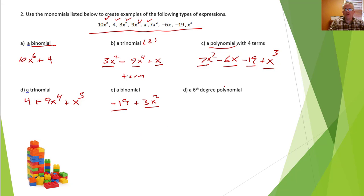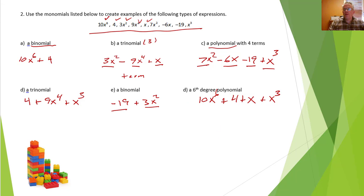For a sixth-degree polynomial, that means the highest exponent is six. So I'll use 10x to the sixth, and then add some other terms: plus 4 plus x plus x cubed. In general it's a polynomial because it has four or more terms.